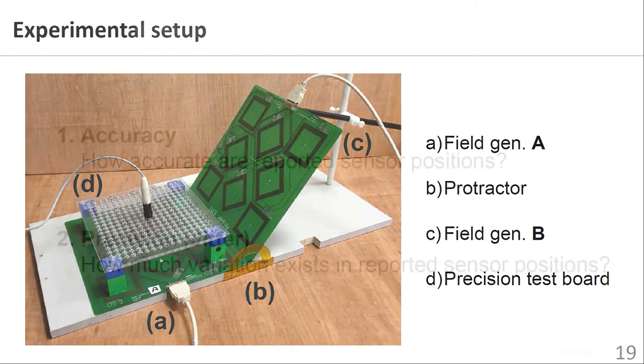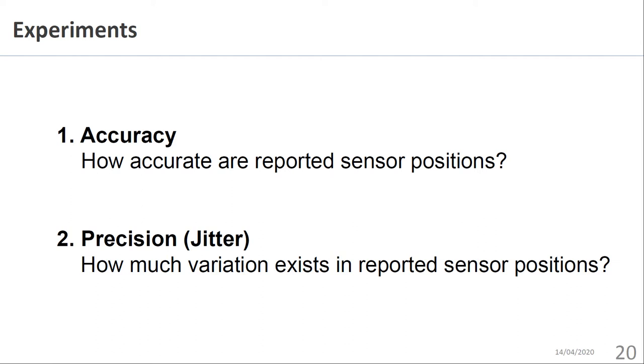Two measurements were performed using this setup. Accuracy measurements measure how true the reported sensor position corresponds with the actual location of the sensor. Precision, also known as jitter, measures the total variation of the reported sensor positions while the sensor remains at a single location.